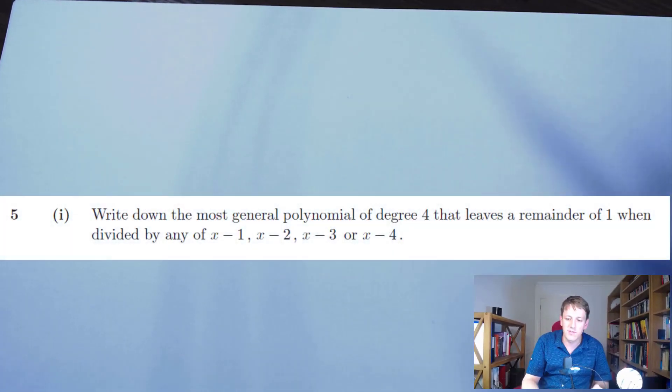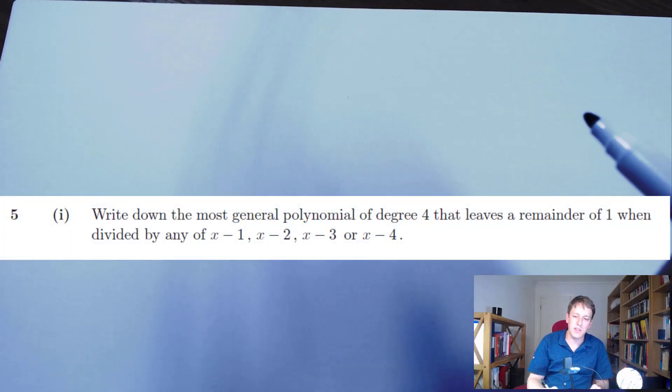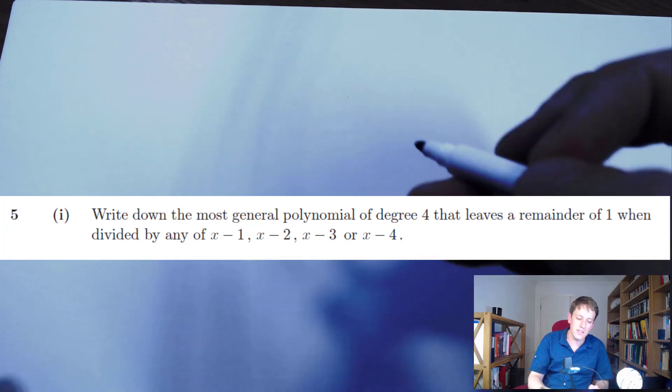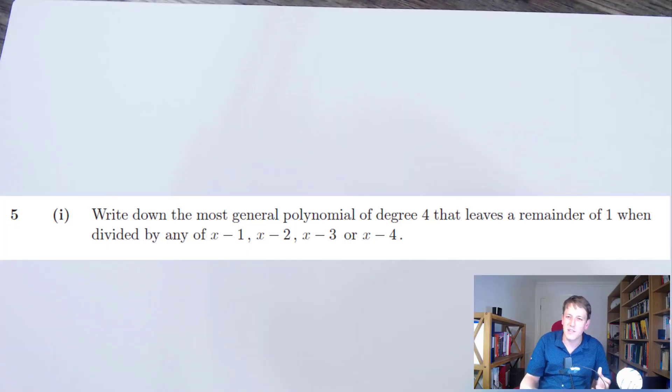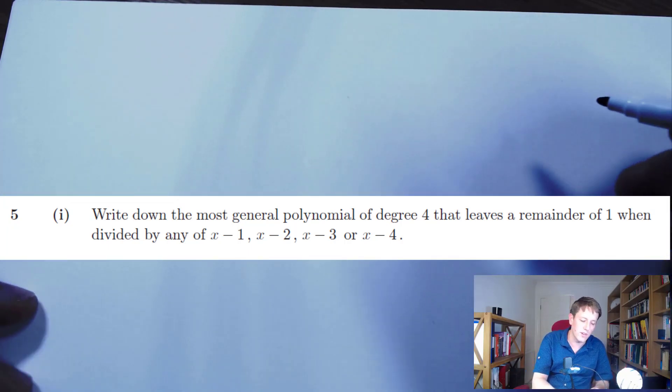Hi, this is Kevin from the Mathsaurus and today we're going to look at question 5 from the STEP 1 mathematics paper. It says: write down the most general polynomial of degree 4 that leaves a remainder of 1 when divided by these different factors. The maths here is the factor and remainder theorem, done in a slightly more advanced way.